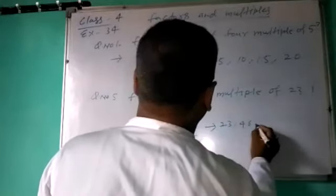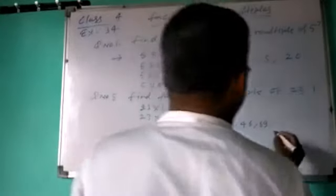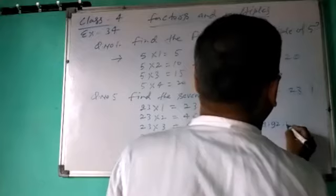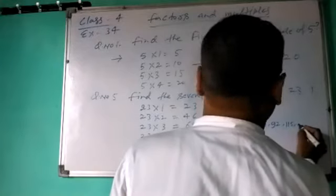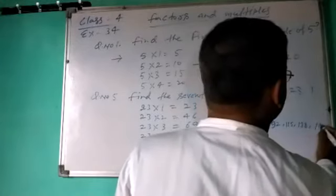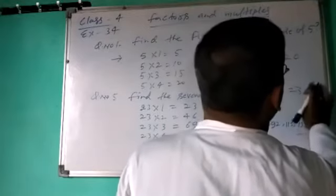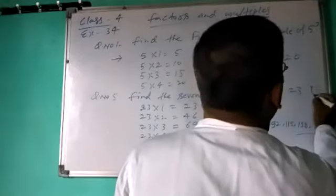Here you also write: 23×1 equals 23, 23×2 equals 46, 23×3 equals 69, 23×4 equals 92, 23×5 equals 115, 23×6 equals 138, 23×7 equals 161. These are correct answers. I think you all know about multiples.